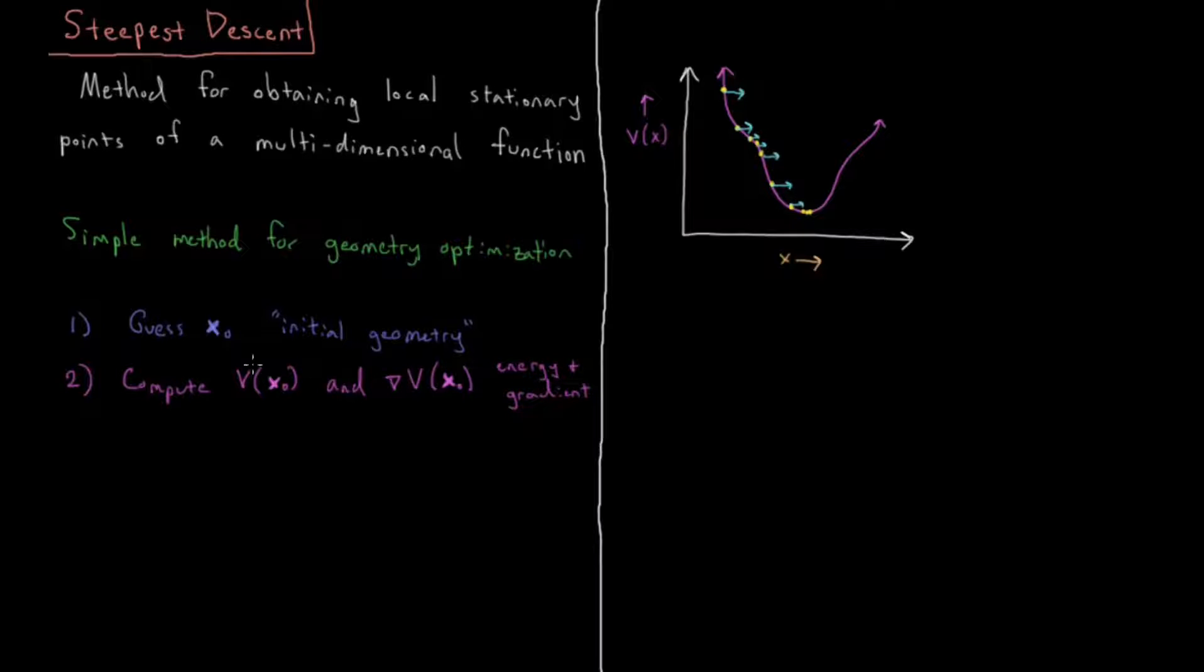So this tells us what our current energy is. This tells us what direction, if we go, is most going to steeply increase the energy. So the negative gradient tells us which direction will most quickly decrease the energy. It's the direction of the forces of the atoms from our potential energy.